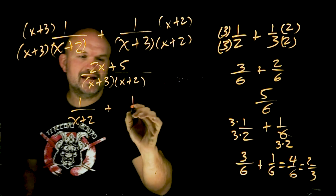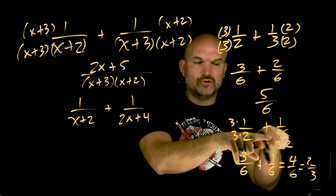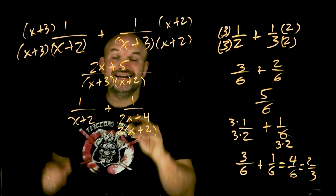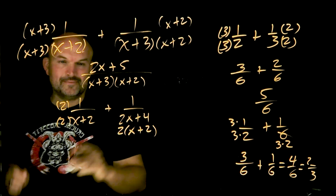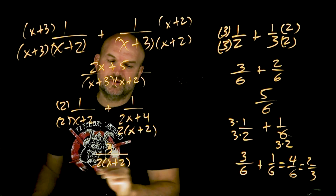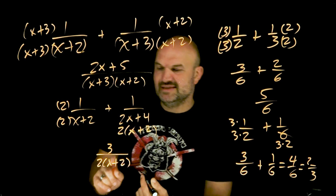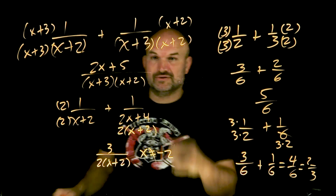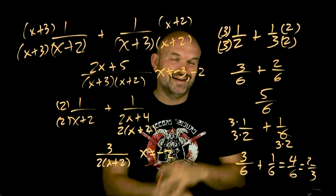However, don't always assume the common denominator is just the product of the two denominators. What if I had one over (x+2) plus one over (2x+4)? I don't want to just multiply the other denominators — look to factor first. I can factor out a two to get 2(x+2), and now these two denominators already share an (x+2). So to get a common denominator I just multiply by two on the top and bottom of the first fraction. Now I have three over 2(x+2). For excluded values, negative two makes the denominator zero, so x cannot equal negative two.